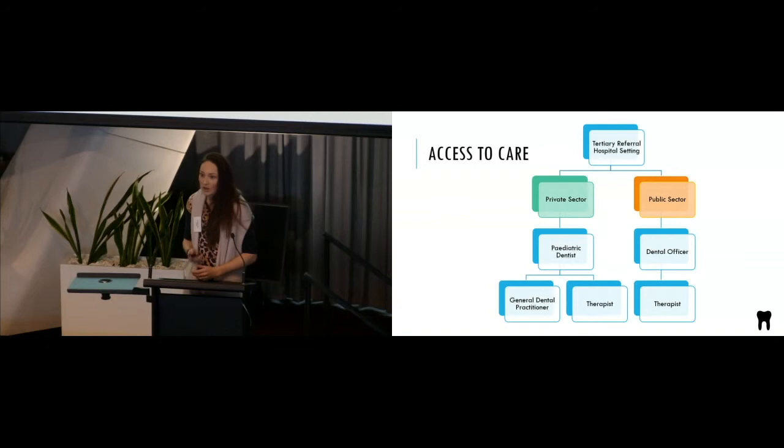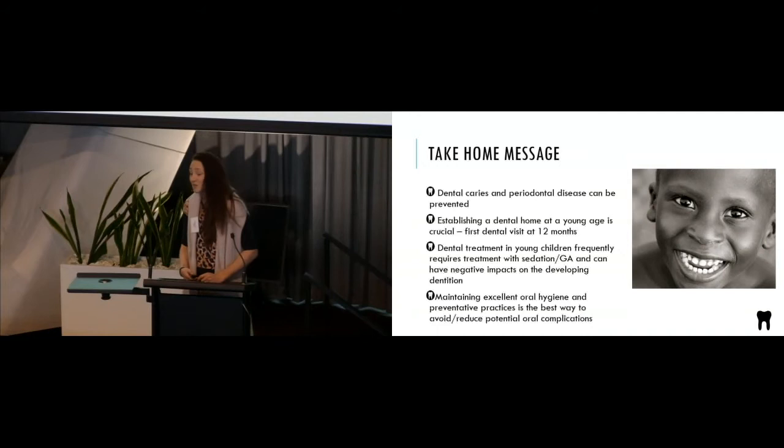And then just some take-home messages that dental caries and periodontal disease can be prevented and that's the best way really to address these issues. If we can maintain excellent oral health, have a really good, they call it a dental home, but if you have a dentist that you see strictly, anyone that's had a Fontan type procedure, I'd want them being seen every three to six months, just for regular check-ups, make sure we're staying on top of things, and try and prevent any potential problems or complications before they arise. So establish that dental home from a young age.